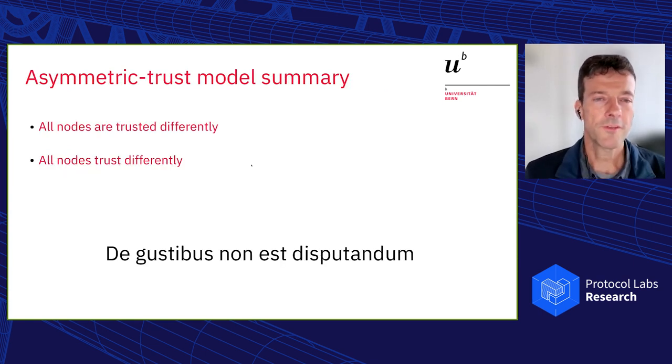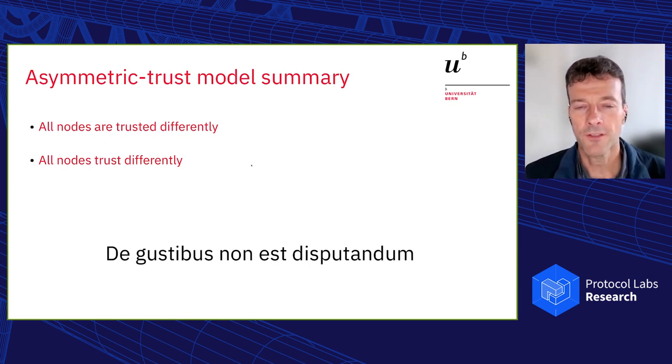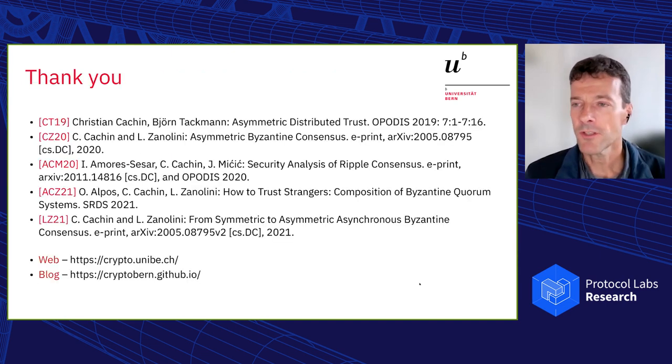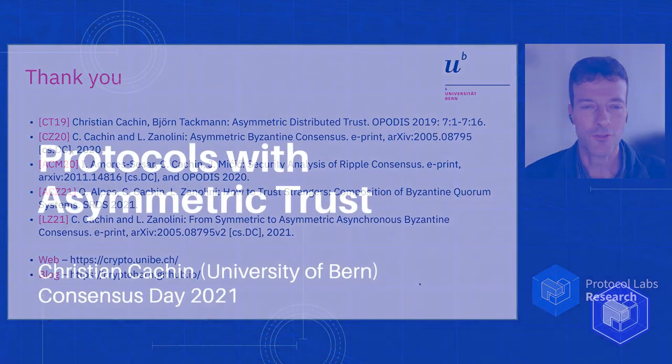So I wanted to give you the summary of the asymmetric trust model, which is now all nodes are trusted differently. And this is because all nodes trust differently. The underlying reason is that you cannot argue about taste. That's the translation of this ancient saying here, because trust is taste is inherently subjective and so is trust. De gustibus non est disputandum. So thank you for the attention. And I'm looking forward to the questions in the discussion section.